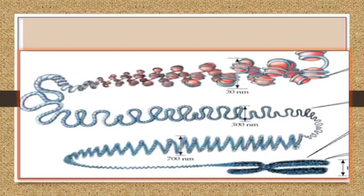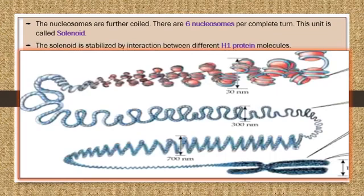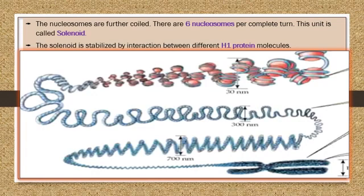The nucleosome unit is further coiled into a structure called a solenoid. The solenoid is stabilized by histone proteins. The complete packaging hierarchy from DNA is: histone octamer, then core DNA, then nucleosome, and then the solenoid structure.